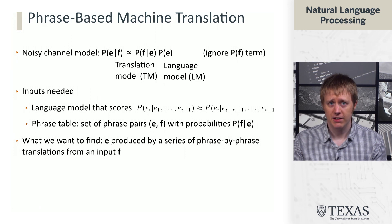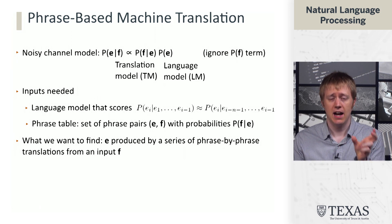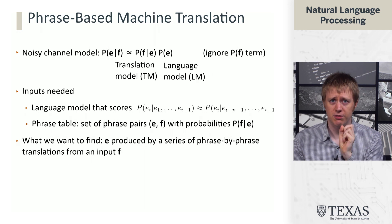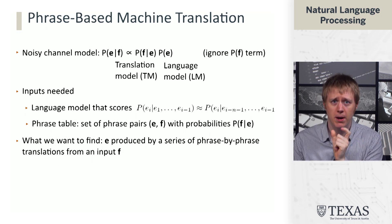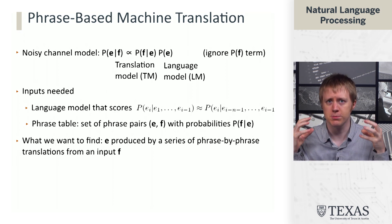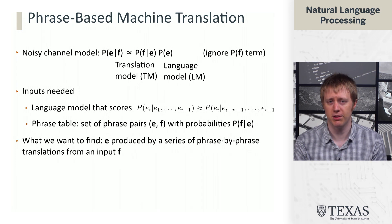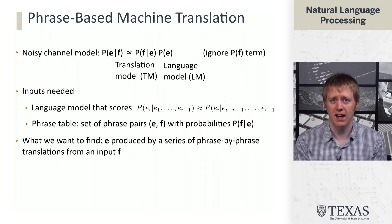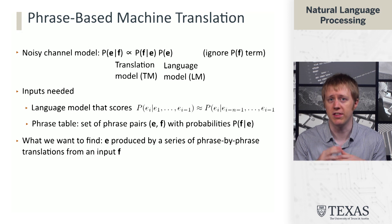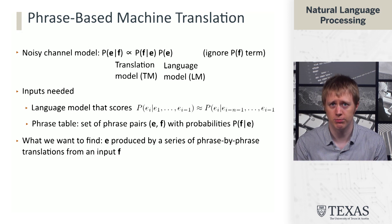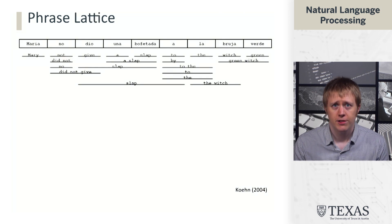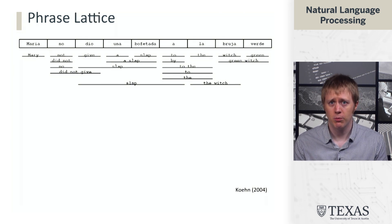And then what we want is we want to actually produce a high-scoring English translation of this French sentence that is produced by a series of phrase-by-phrase operations. So the space of Es is much, much larger than anything else we've dealt with so far, really, in tasks like HMMs for part-of-speech tagging. It was exponential in the length of the number of tags, but it was like 40 to that length. And now we're going to have something like 20,000 to that length if we have a pretty large vocabulary.